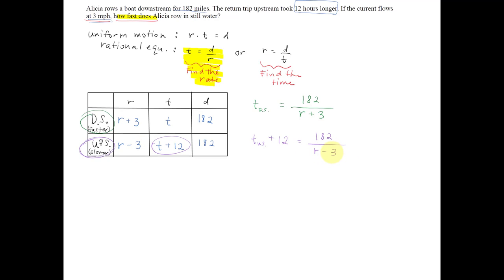So we want to set these two times equal to each other. Here, the time it took to go upstream equal to the time it took going downstream. However, we don't have the upstream isolated, do we? So let's go ahead and subtract 12 from each side.